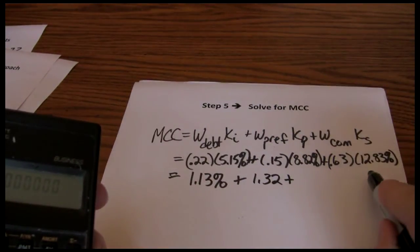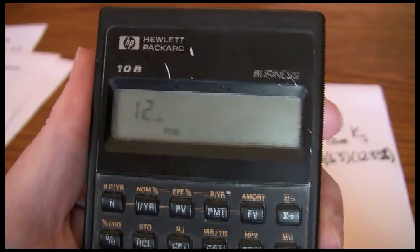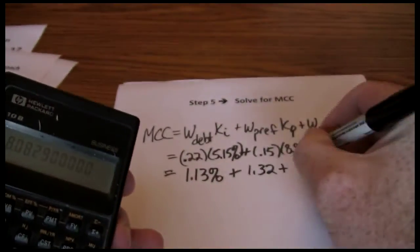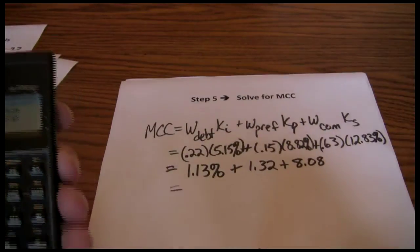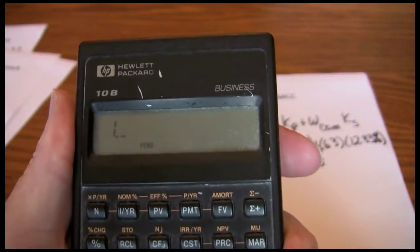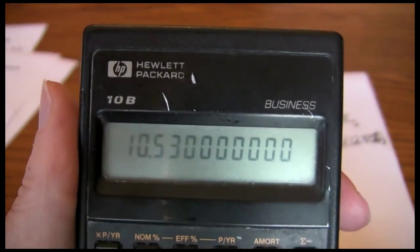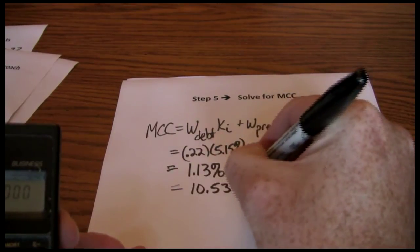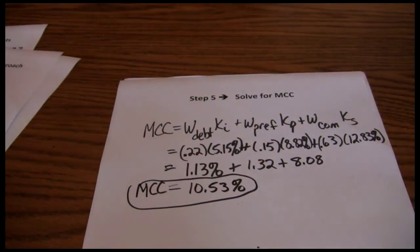And lastly, 0.63 times 12.83 gives us 8.08. Add those up: 1.13 plus 1.32 plus 8.08 gives us a total cost of capital of 10.53 percent. And that is our final answer.